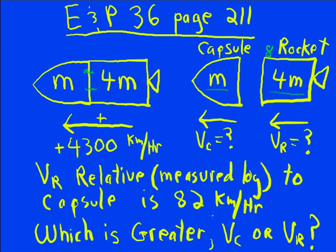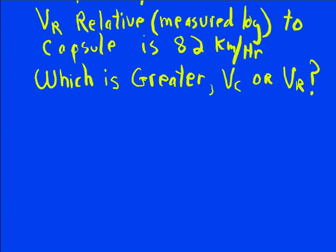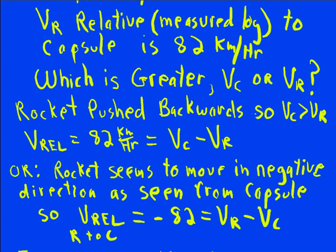you would see it going 82 kilometers per hour relative to you. To set this up, think about which one of these is going to be greater, V capsule or V rocket. If the capsule got pushed forward, it would have to be V capsule because the rocket got pushed backwards. So V capsule is greater than Vr.